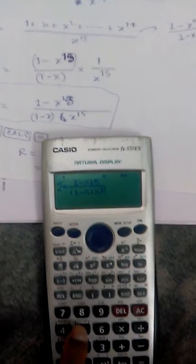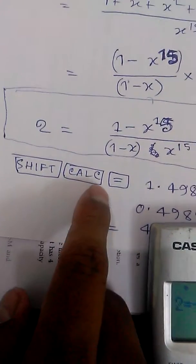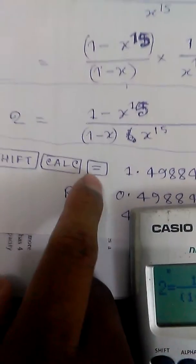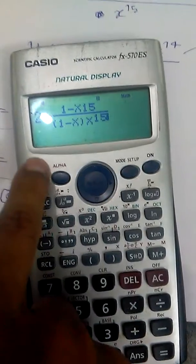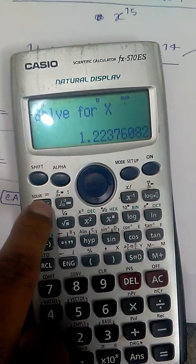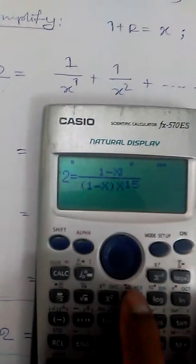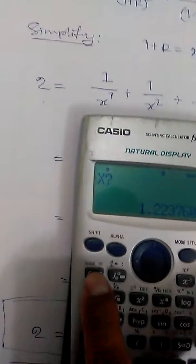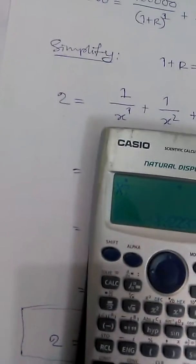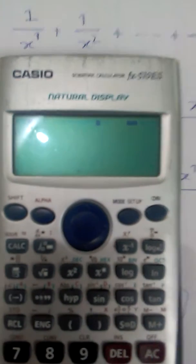...the power 15. Again, we will do the same thing: shift, calc, and equals to shift. You will see, sorry, what happened? Actually we made a mistake here. 1 minus X to the power 15, here the equation...